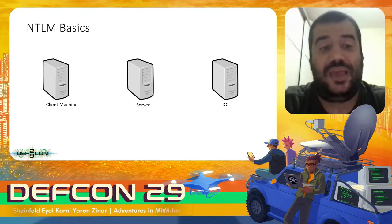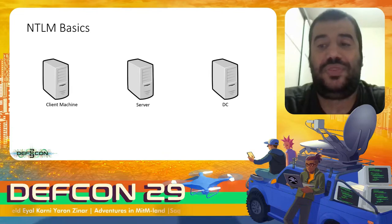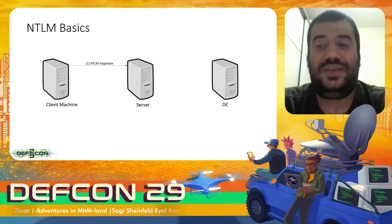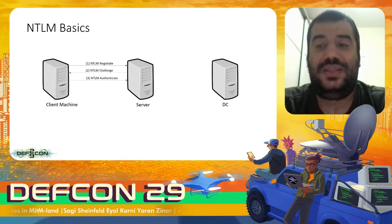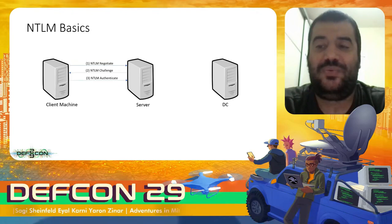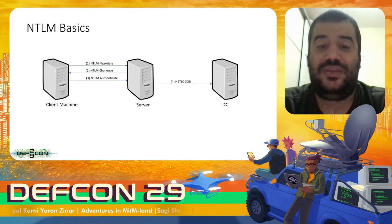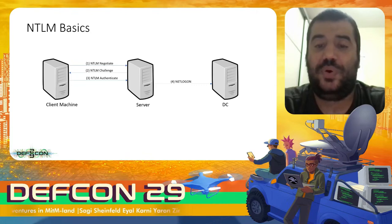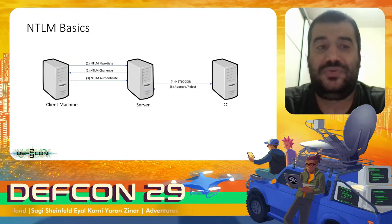In NTLM, a client machine wants to authenticate to a server. It sends an NTLM negotiate request. The server creates a nonce and sends it in a challenge request. The client machine signs the nonce with the user's password. The server does not know how to validate the user password, so over the NetLogon channel it sends the NTLM authenticate message, and the DC either approves or rejects the user authentication by validating the user's password.